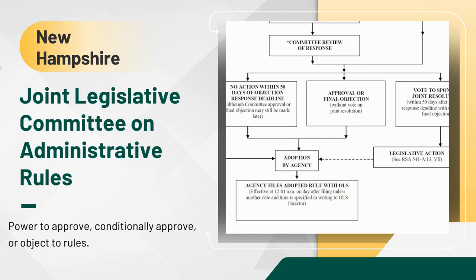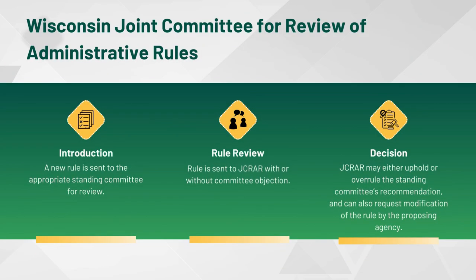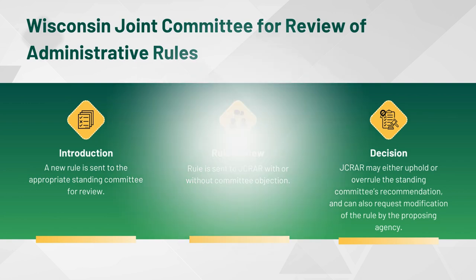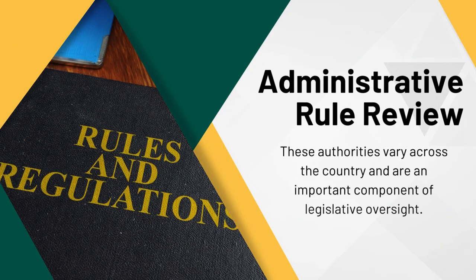Wisconsin has rules authority in both a Joint Committee for Review of Administrative Rules, JCRAR, and within their standing committees. A new rule is first sent to the appropriate standing committee for review, and then the rule must be sent to JCRAR with or without committee objection. JCRAR may then decide to either uphold or overrule the standing committee's action and can also request modifications of the rule by the proposing agency. Administrative rule review action varies across the country and is an important component of legislative oversight.